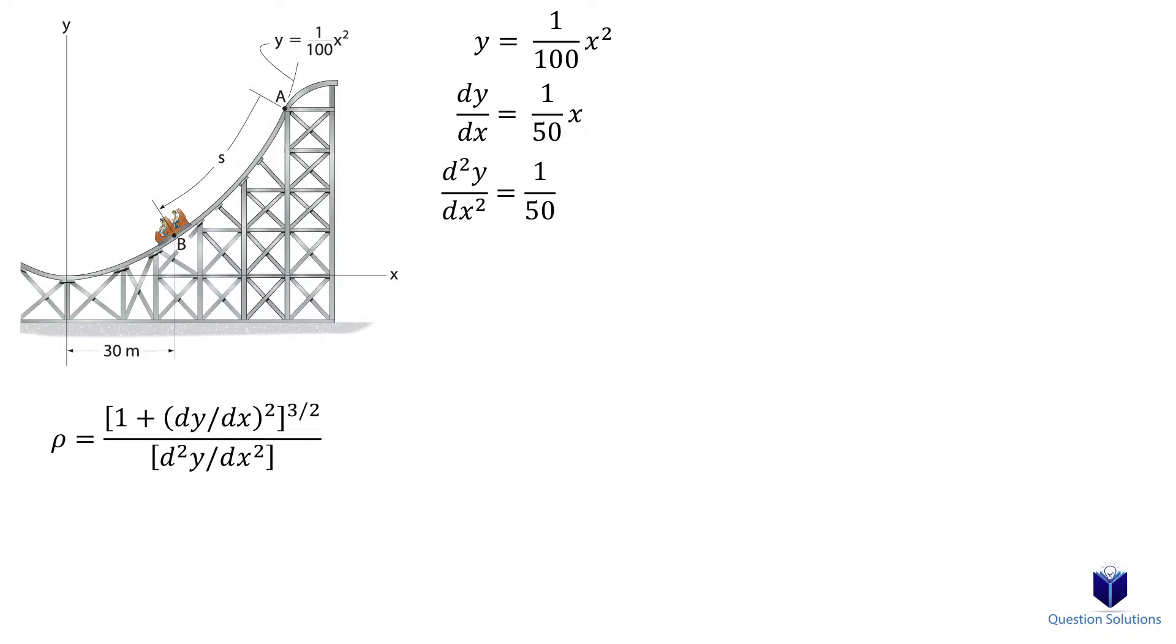Now we can plug them into our equation. Since the question wants us to find the magnitude at x equals 30 meters, we can plug that in as well. Solving gives us 79.3 meters as our radius of curvature.